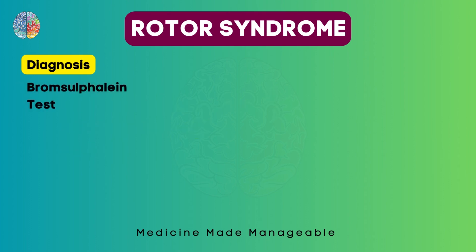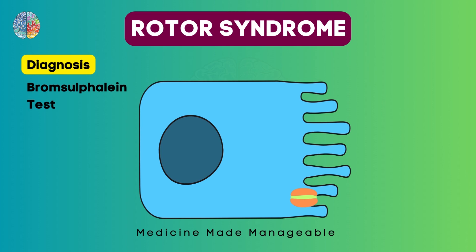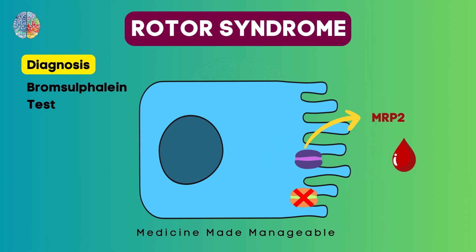We can also do the Bromsulphalein test, which can be used to differentiate between Rotor syndrome and Dubin-Johnson syndrome. In Rotor syndrome, the OATP1B1 is defective but MRP2 is intact. When a dye is given, it enters the hepatocytes and exits through MRP2, passing into the bile ducts normally. But in Dubin-Johnson syndrome, since MRP2 is not working, the dye cannot go forward and regurgitates back into the blood.